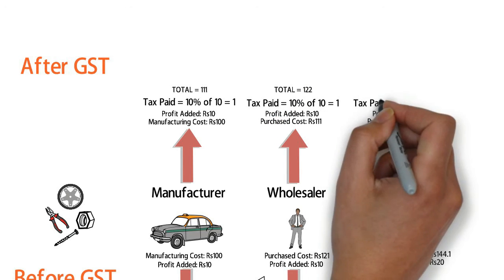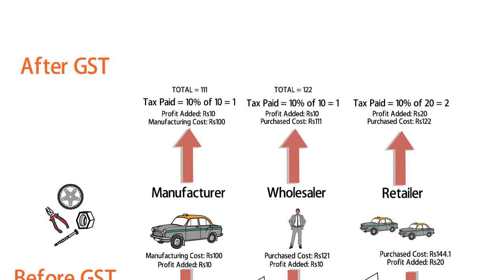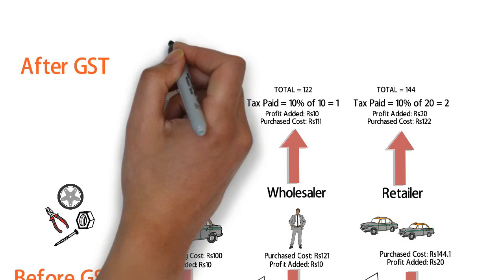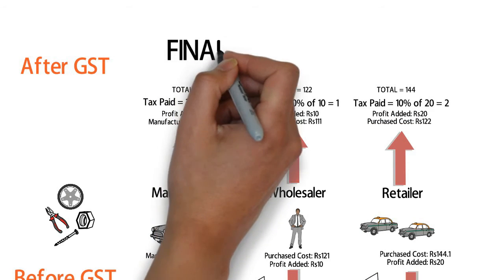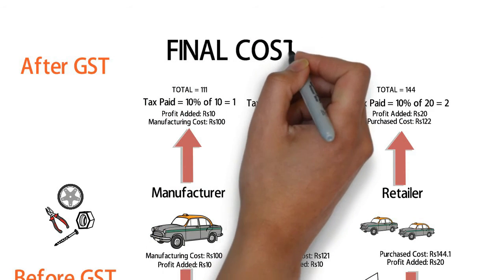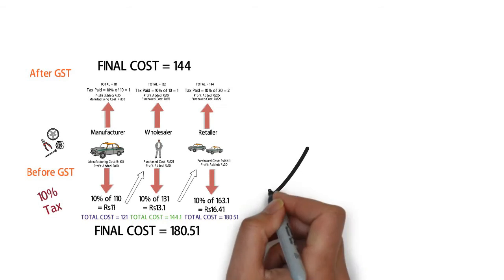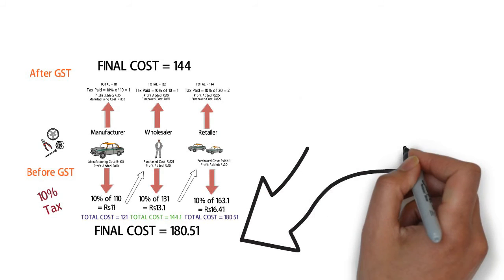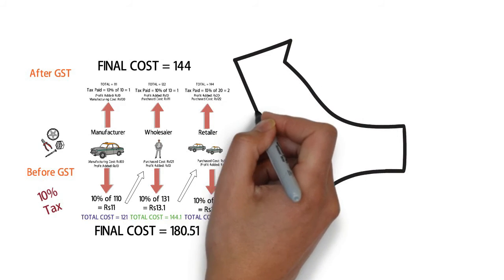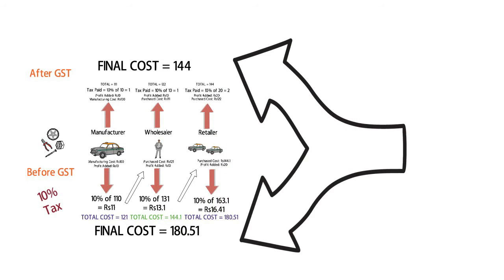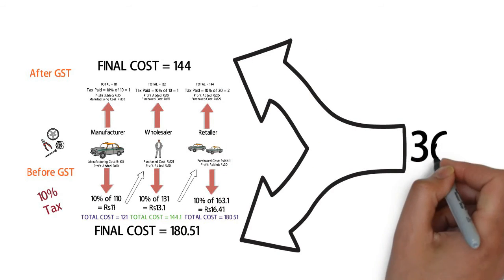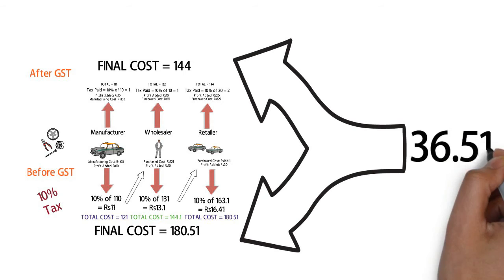The retailer follows the same method, and finally the consumer gets the car at 144 rupees. Now if we compare the final prices before and after GST, we can clearly see that the cost of the car after GST is less by 36.51 rupees.